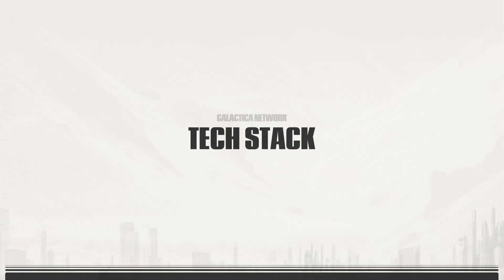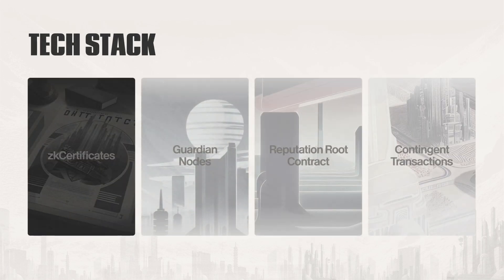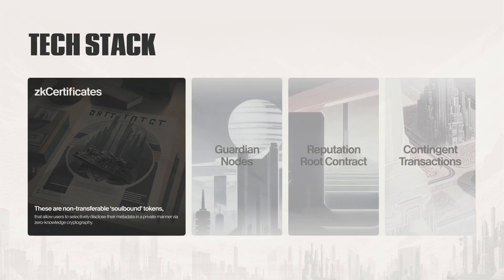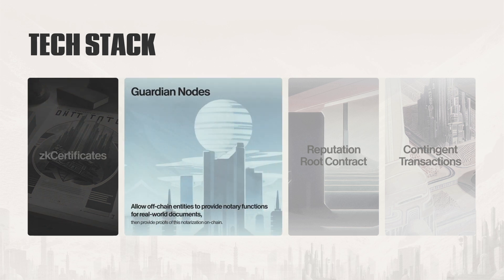We're going to start our journey into Galactica Network with its tech stack. First, we have ZK certificates. These are non-transferable, soulbound tokens that allow users to selectively disclose their metadata in a private manner via zero-knowledge cryptography. We then have Guardian nodes, which allow off-chain entities to provide notary functions for real-world documents, then provide proofs of this notarization on-chain.